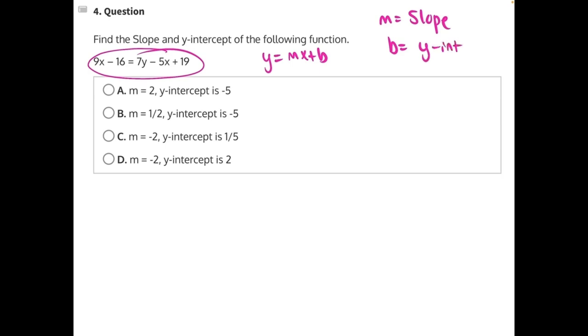The easiest way to do this is to isolate our variable y, which means taking everything that is not y and moving it to the other side of the equal sign. Let's start with this 19. 19 is being added to the equation, so we need to do the opposite and subtract 19 from both sides.